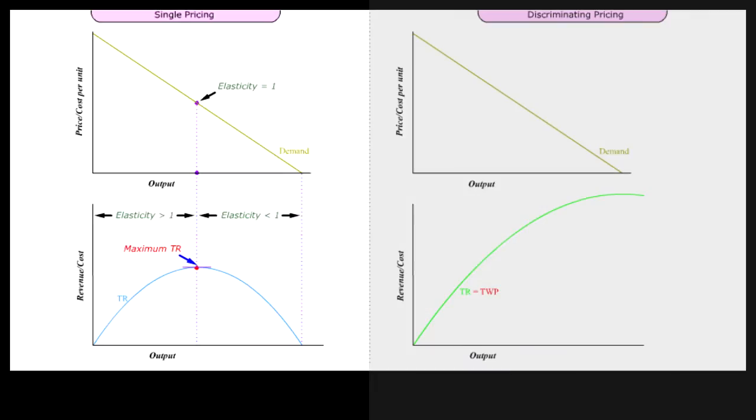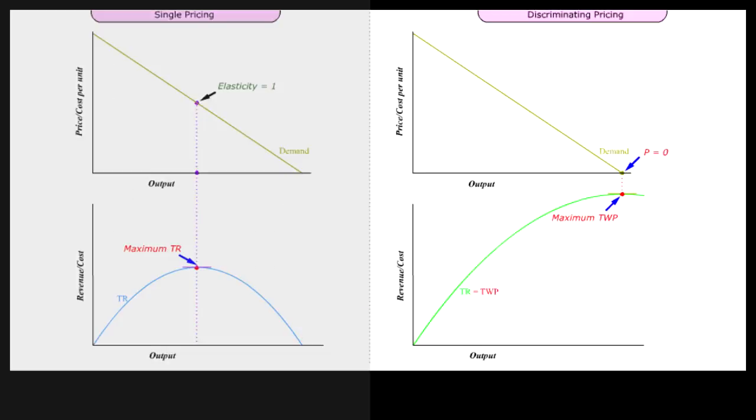Because single price is an average price, single pricing seller's TR is affected by the elasticity of demand. TR maxes out when elasticity is equal to one. Because discriminating price is a marginal price, price discriminating seller's TR, that is TWP, maxes out only when price is zero.